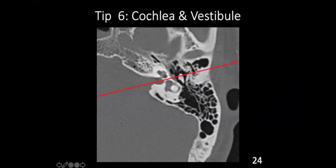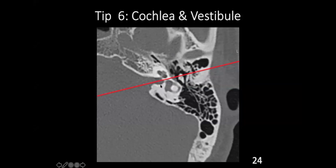How do we differentiate the cochlea from the vestibule? Unless the cochlea is severely malformed — like common cavity or aplasia — they have a standard orientation. Draw an imaginary line parallel and through the middle of the internal auditory meatus. Whatever structure is anterior and medial to this line is the cochlea. Whatever is posterior and lateral is the vestibule and semicircular canals. This is an important axial section orientation to remember.